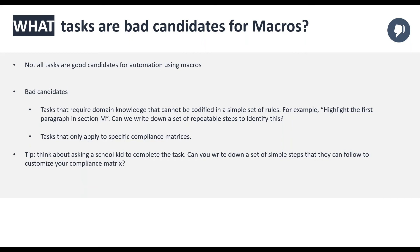It's also not a good idea to automate tasks that only apply to very specific compliance matrices, because they may not be repeatable for other exports. For example, if formatting was applied to remove certain information specific to one RFP, a colleague running that macro on a different RFP might unknowingly remove relevant content. Make sure the tasks you're automating apply to as many RFPs or documents as possible.